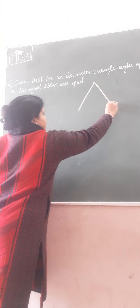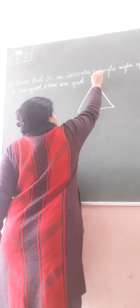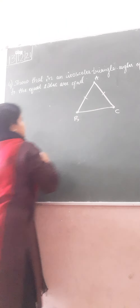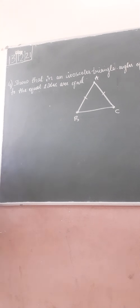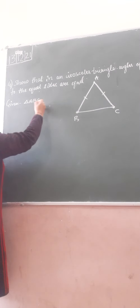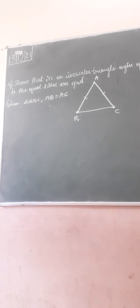Draw a triangle ABC. This is triangle ABC, in which side AB is given equal to side AC. So, given: triangle ABC, AB is equal to AC. Two sides are equal in this isosceles triangle — in an isosceles triangle, two sides are always equal.